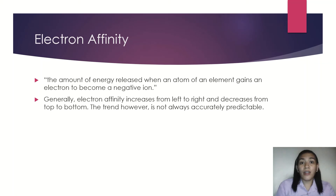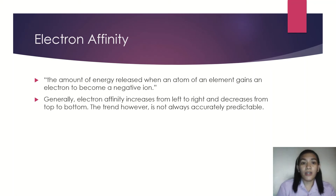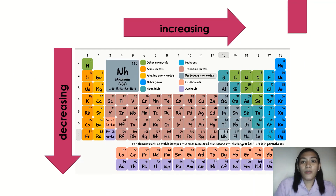Last, we have electron affinity. Electron affinity is the amount of energy released when an atom of an element gains an electron to become a negative ion. It is related to the two previous properties — electronegativity and ionization energy. Generally, electron affinity increases from left to right and decreases from top to bottom. However, this trend is not always accurately predictable, so it may vary.